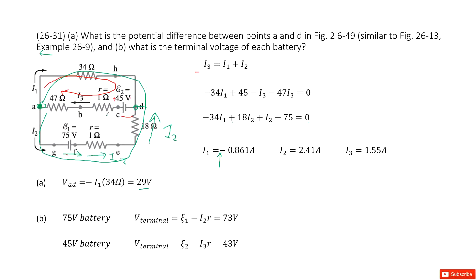Now we find the terminal voltages for each battery. For the 75-volt battery, the internal resistance is 1 ohm, so the terminal voltage is the EMF minus the current times the internal resistance; the current here is I2. Similarly for the 45-volt battery, the terminal voltage is the EMF minus the current times the internal resistance, where the current through that branch is I3. Substitute the values and you get the answers. Thank you.